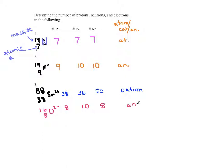I've completed the symbol. On any table I give you, I can ask for mass number, atomic number, protons, electrons, neutrons, the symbol, and whether it's an atom, cation, or anion. That's all I can ask you for.